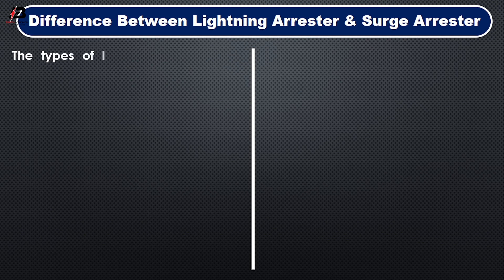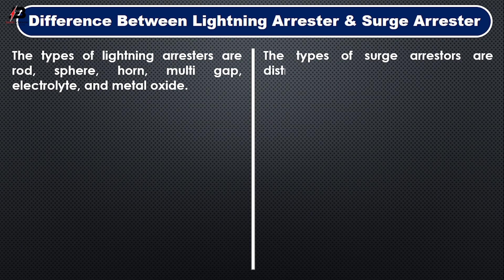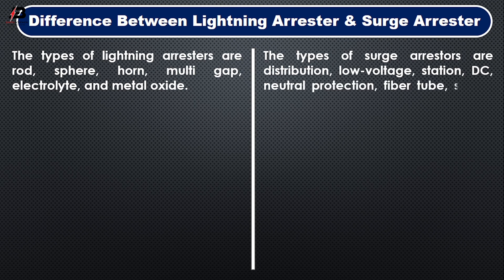The types of lightning arrester are: rod, sphere, horn, multi-gap, electrolyte, and metal oxide. The types of surge arrester are: distribution, low voltage, station, DC, neutral protection, fiber tube, signal network, etc.